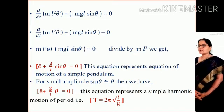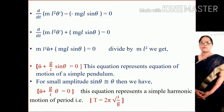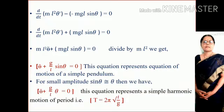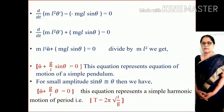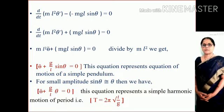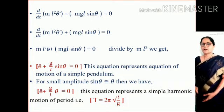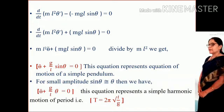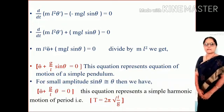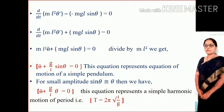d/dt of m L squared theta dot equals m L squared theta double dot. So m L squared theta double dot plus mgL sin theta equals zero. Dividing this equation by m L squared, we get theta double dot plus g upon L sin theta equals zero. This equation represents the motion of a simple pendulum.